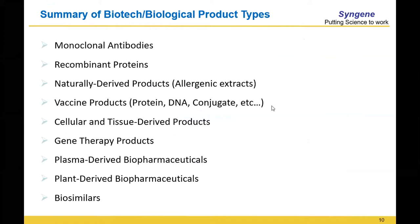When we talk of biological products, there are many entities: monoclonal antibodies on top, then recombinant proteins — a very well-known recombinant protein being insulin, which is a chronic therapy — naturally derived products, vaccine products, gene therapy products, plant-derived biopharmaceuticals, and so on and so forth.